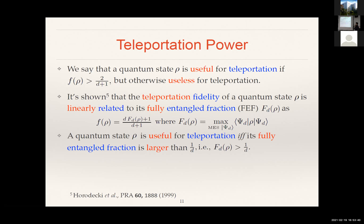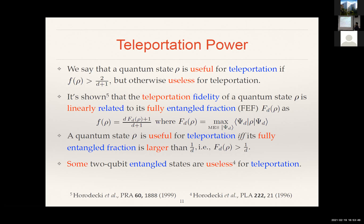It's interesting to realize that even before this connection was discovered, it was pointed out by the Horodeckis back in 1996 that there were some two-qubit entangled states that are entangled but are actually useless for teleportation. And later on, it was shown also by the Horodeckis that all bound entangled states are useless for teleportation — meaning all those states that are entangled but from which it's not possible to distill maximally entangled two-qubit states are useless for teleportation.